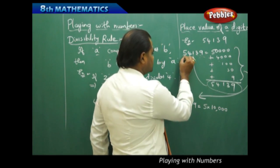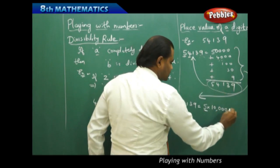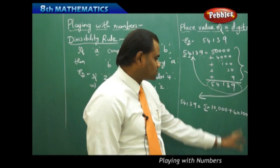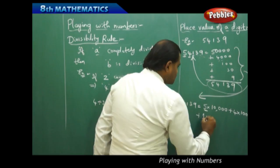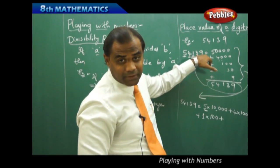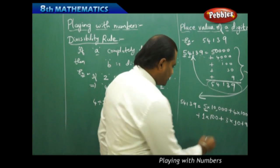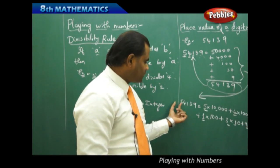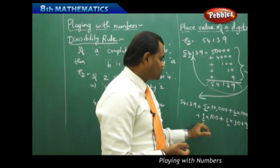We can write 54139 as: 5 times 10,000, because 5 × 10,000 = 50,000. Then the second digit 4 is extracted, and we are left with 3 zeros, so 4 times 1,000 equals 4,000. The third digit 1 gives us 1 times 100. The fourth digit 3 gives us 3 times 10. And finally 9 times 1. So the digits 5, 4, 1, 3, and 9 are extracted and split separately in this expanded form.